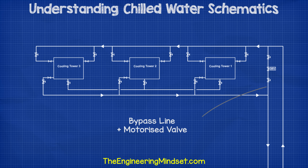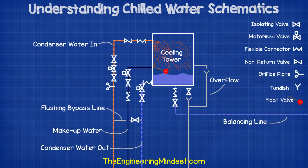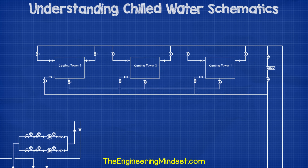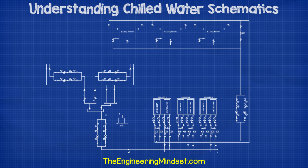There might also be a bypass line with a motorized valve across the cooling towers' flow and return lines. This can have various functions such as maintaining a minimum flow rate and also protecting the chiller from tripping on low and high pressure due to the temperature of the return condenser water being out of design limits — for example, during startup on a cold winter morning. Another common version for the cooling tower you might come across has the flow and return lines for the condenser water, a balancing line between other cooling towers, a makeup line which tops up the water if the level gets too low, and an overflow with a drain line. Some will have a flushing line between the flow and return lines for system cleaning. If you want to know how cooling towers work, we've covered this in a previous video — links are in the video description below.